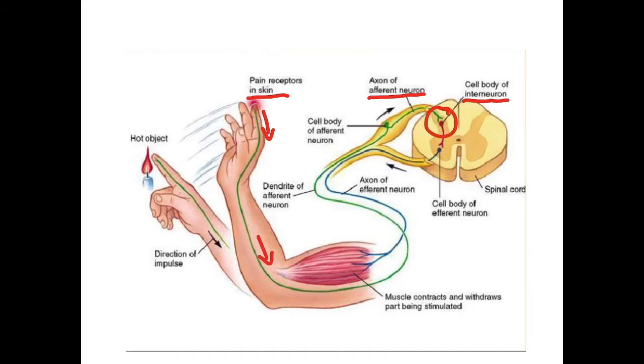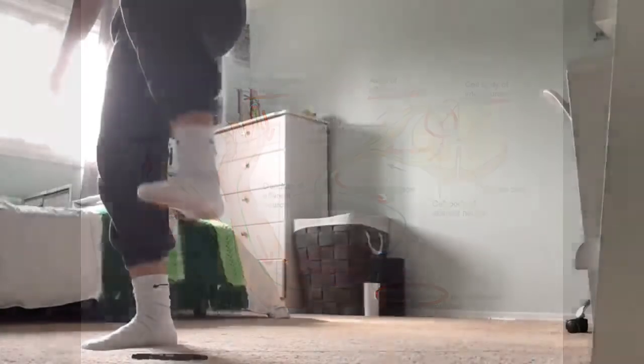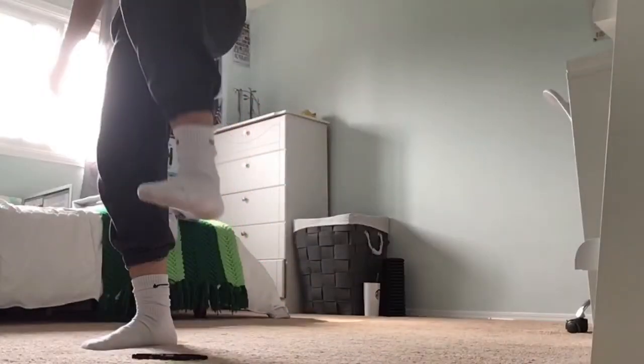all the way up to the interneurons in my primary somatosensory cortex, which will then activate the motor neurons to begin the flexor reflex in my right foot. This is essentially the process of me quickly picking up my foot to move it away. The flexor muscles in my right foot will become excited to contract my hamstring muscle in order to accomplish this.